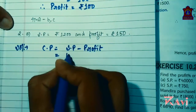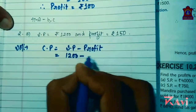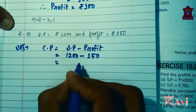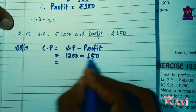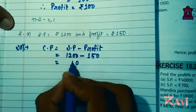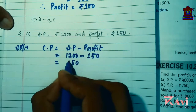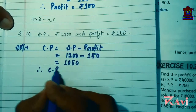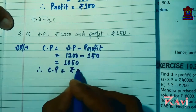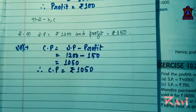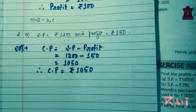CP equals SP minus profit. What is SP here? 1200 minus 150. 1100 minus 150: 0, 10 minus 5 is 5, 1 minus 1 is 0, 1. Therefore CP equals rupees 1050.